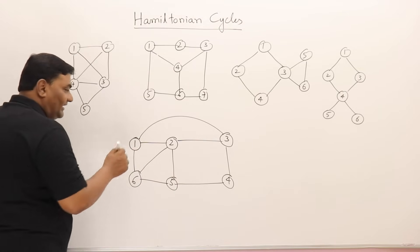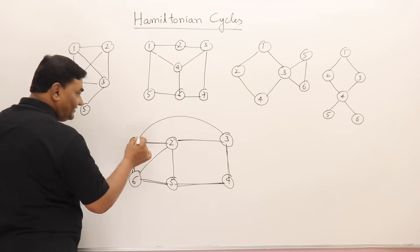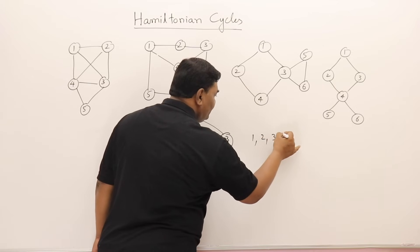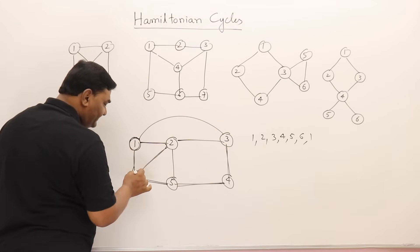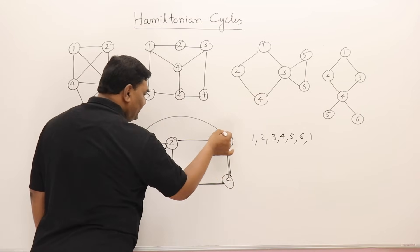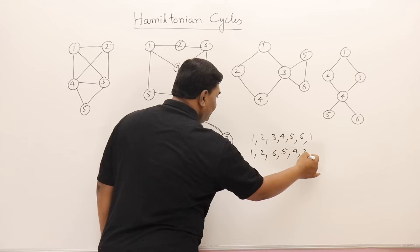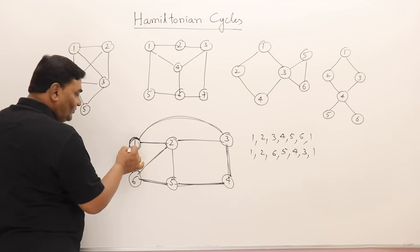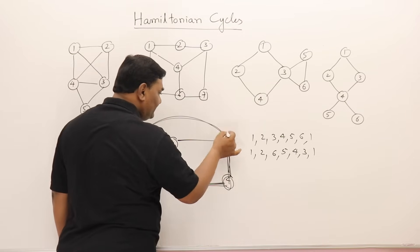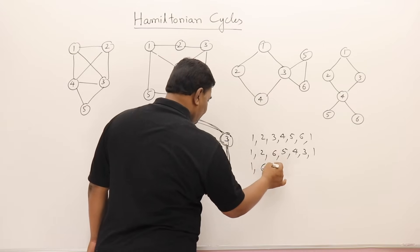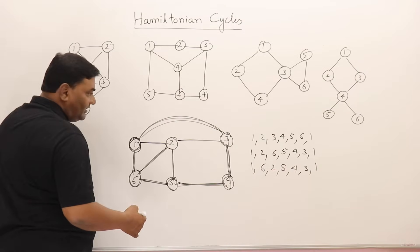Let us manually find out if there is any Hamiltonian cycle in a graph. Starting from vertex 1: one cycle is 1→2→3→4→5→6→1. Another cycle: 1→2→6→5→4→3→1. One more cycle: 1→6→2→5→4→3→1. So you can find that there are more than one cycles possible in this graph.